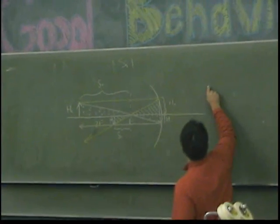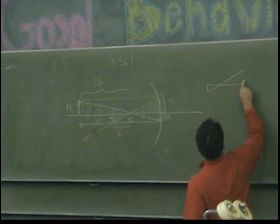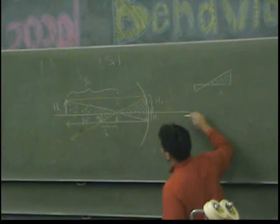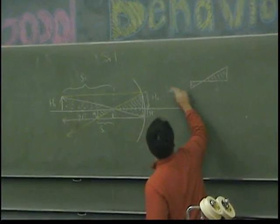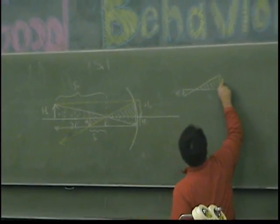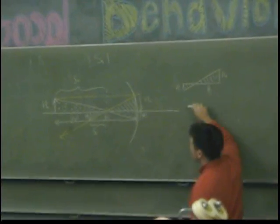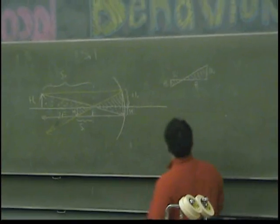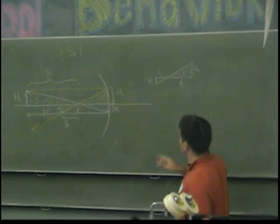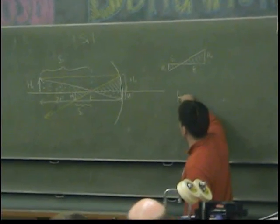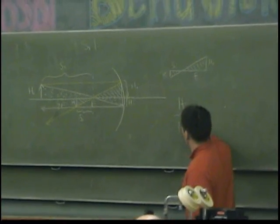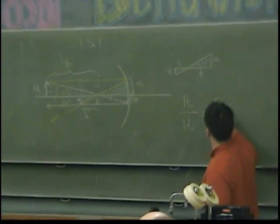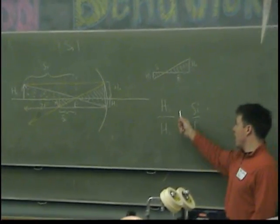So let's use our dashed triangles. I've got HI and HO down here. This length here is F, and then this length here is SI. I'm going to use the ratios from similar triangles. HI to HO is equal to SI to F. So we've got HI, HO, SI, F.